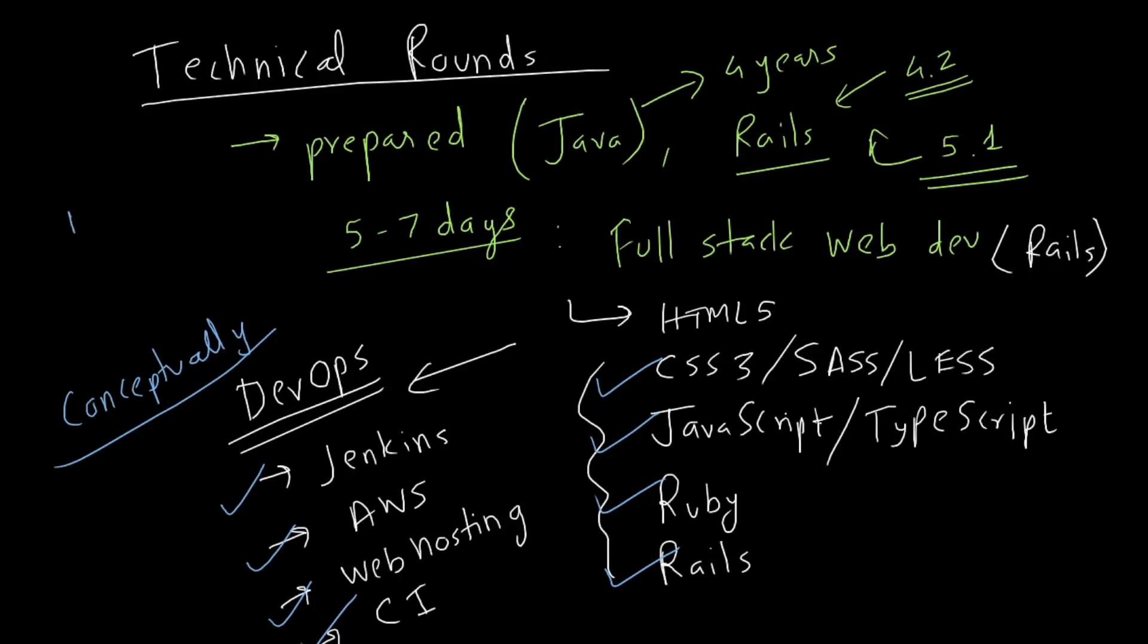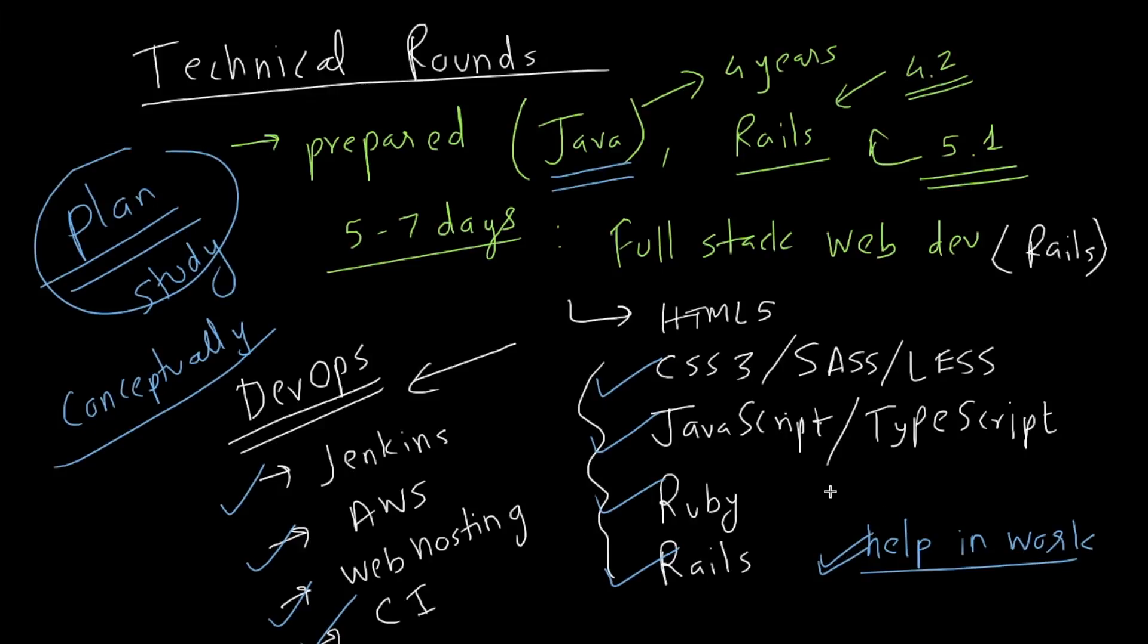So I would always say that plan very well your technical rounds, really plan and study. It's very important. Don't take for granted that because you have worked in Ruby on Rails you can crack technical round easily, or for that matter Java or any other technology. Keep that in mind: preparation is the key for your technical round. And not just it will help you in the interview, but it will also help you in your work. Whenever you join this company or even if you don't end up joining a company and you go back to your previous job, it will always help. Studying periodically will always help.